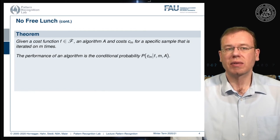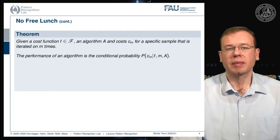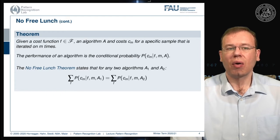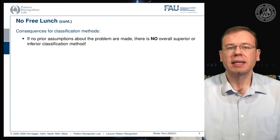The no free lunch theorem tells us: given a cost function f living in the space of cost functions, an algorithm a, and cost c_m for a specific example iterated m times, the performance of an algorithm is the conditional probability of the cost given the cost function, the iteration, and the algorithm. The theorem states that for any two algorithms a1 and a2, there is equivalence in terms of the sum of these probabilities over all possible cost functions.